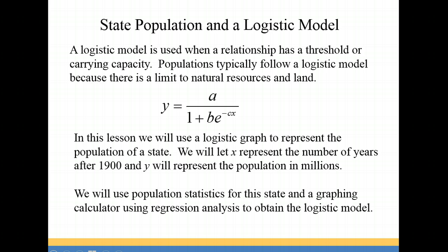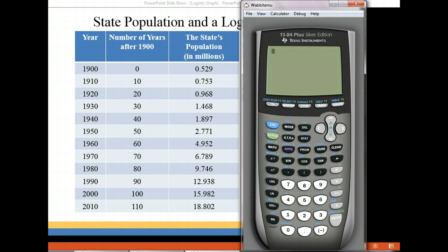We will use population statistics for the state and a graphing calculator to obtain the logistic model. The table shows the population statistics from the year 1900 to the year 2010. In the year 1900 the state's population was 0.529 million or 529,000 residents. In the year 1950 the population was 2.771 million, and in the year 2010 the state had a population of 18,802,000.